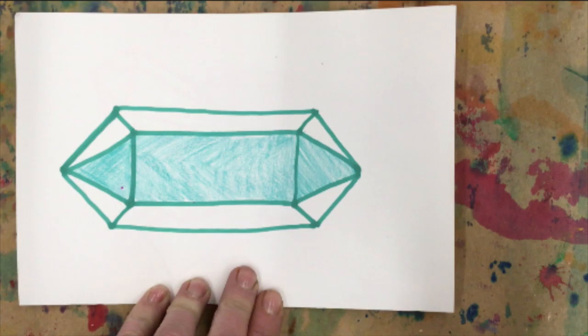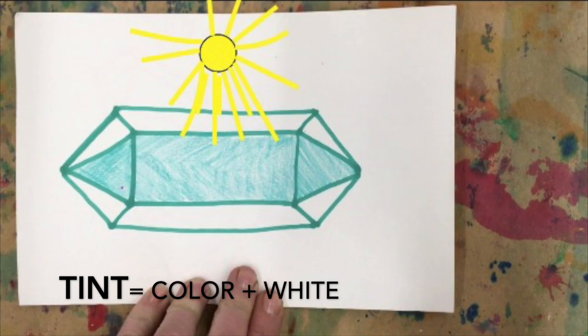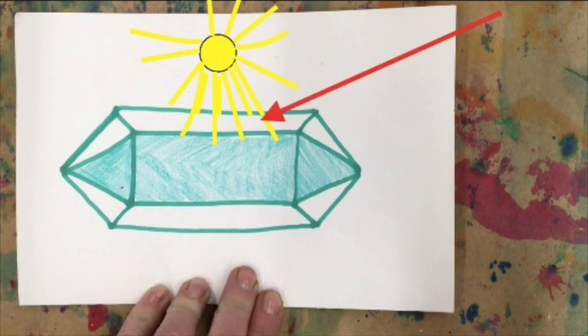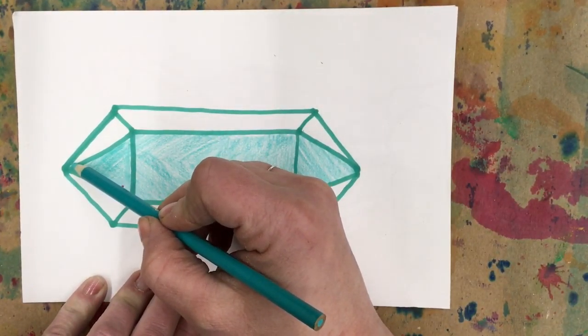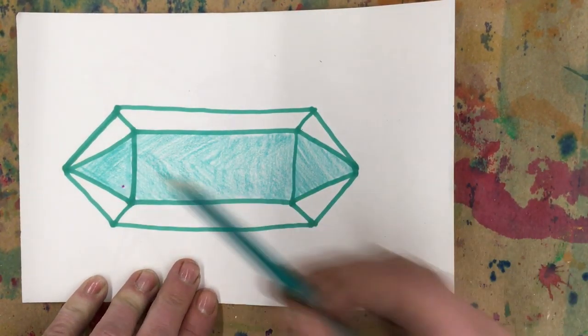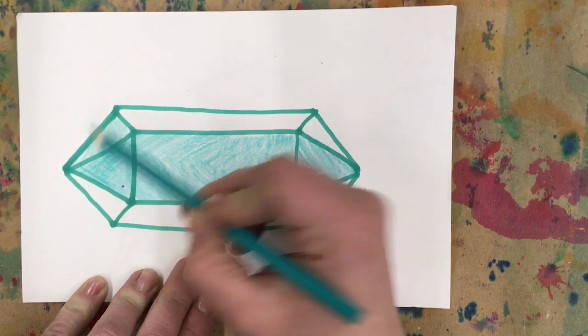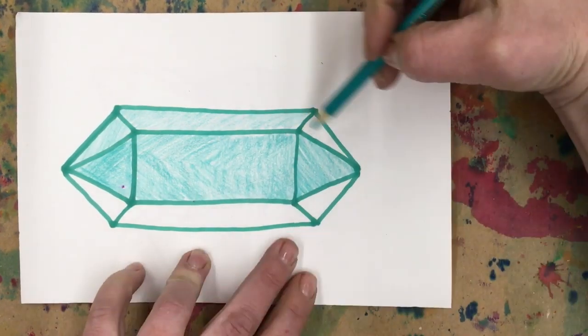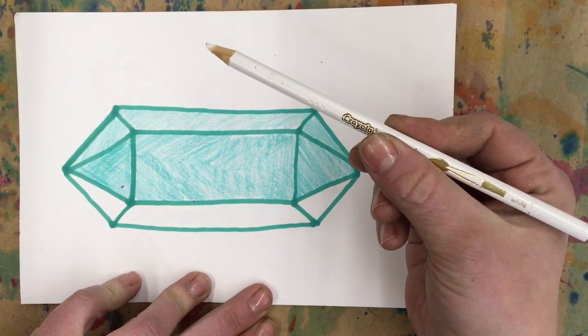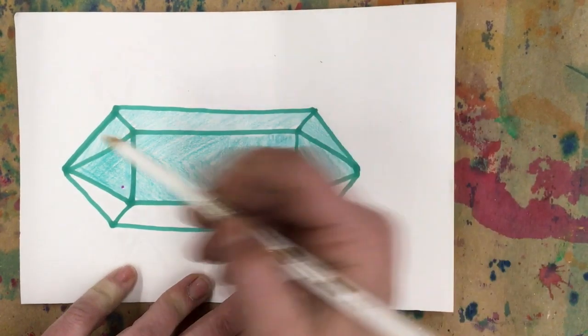What do we call a color we add white to? It's a tint. We'll put it on the lightest side where the most sunlight is reaching. For a tint, help yourself out by using light pressure, don't press hard. Then add white right over top. You can press a little hard with your white.